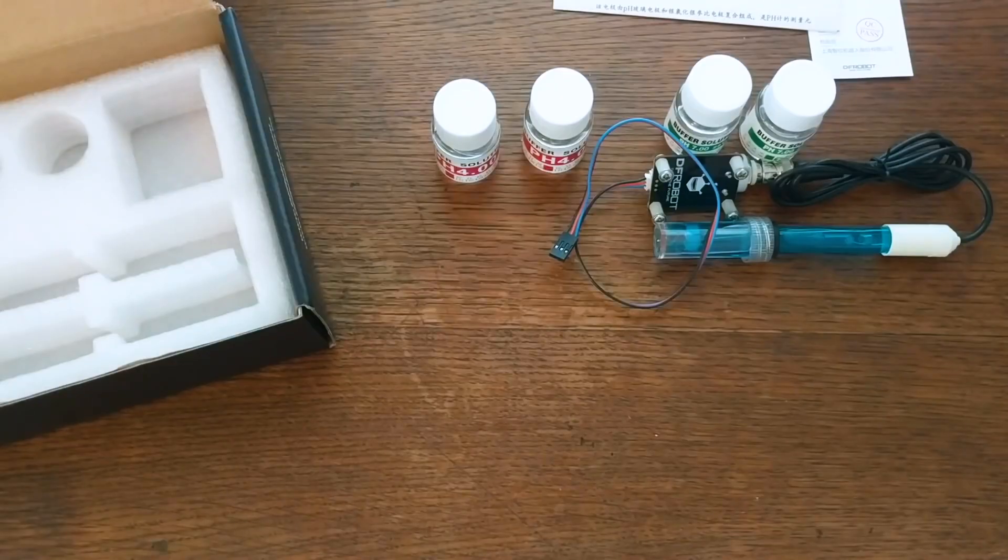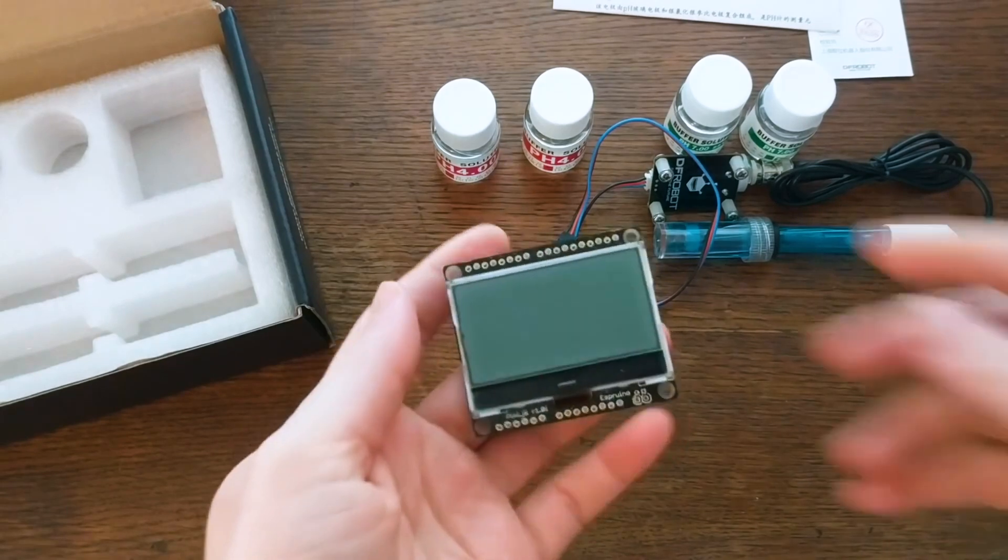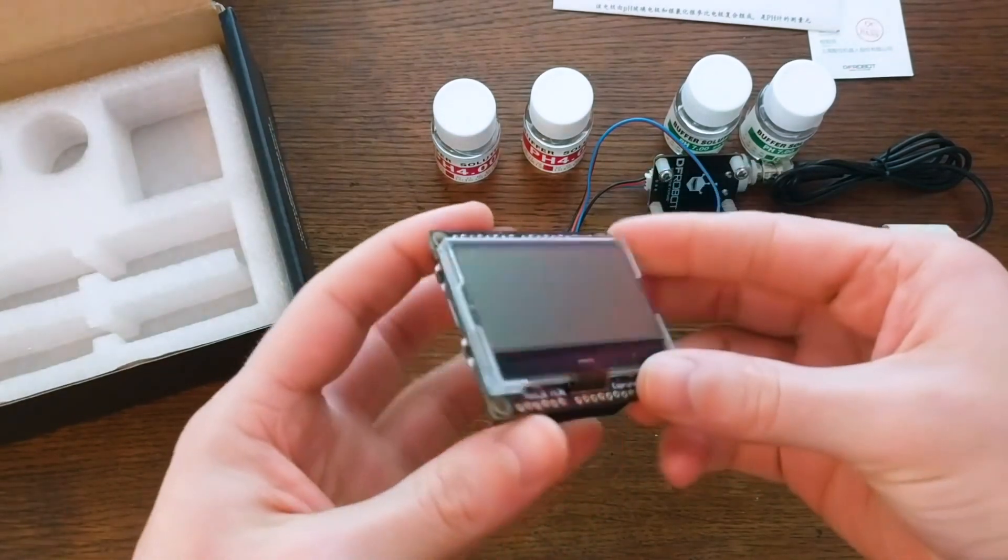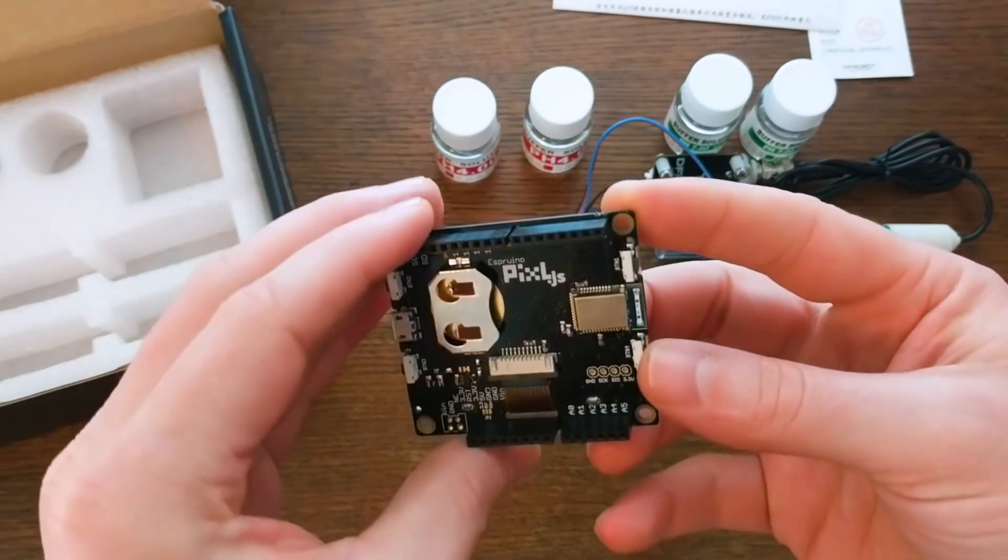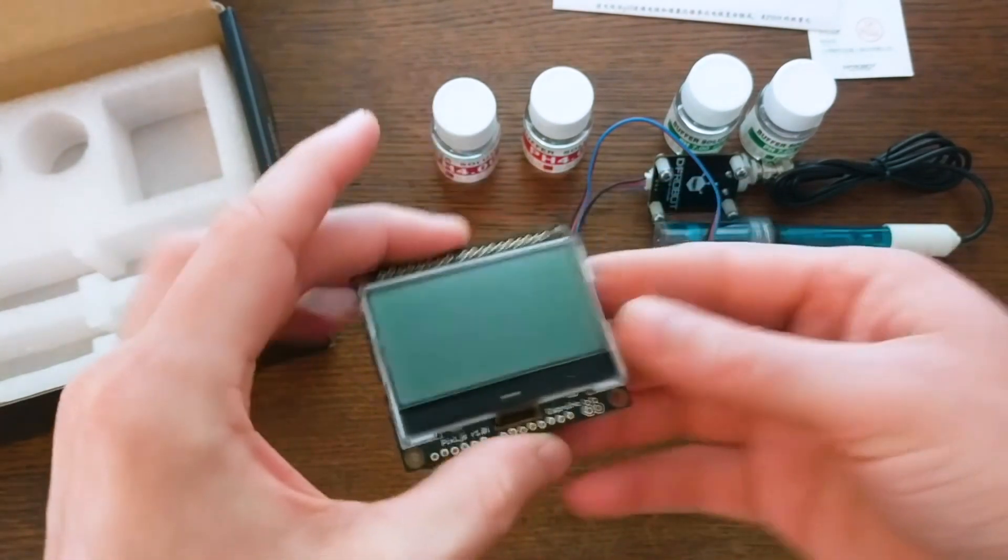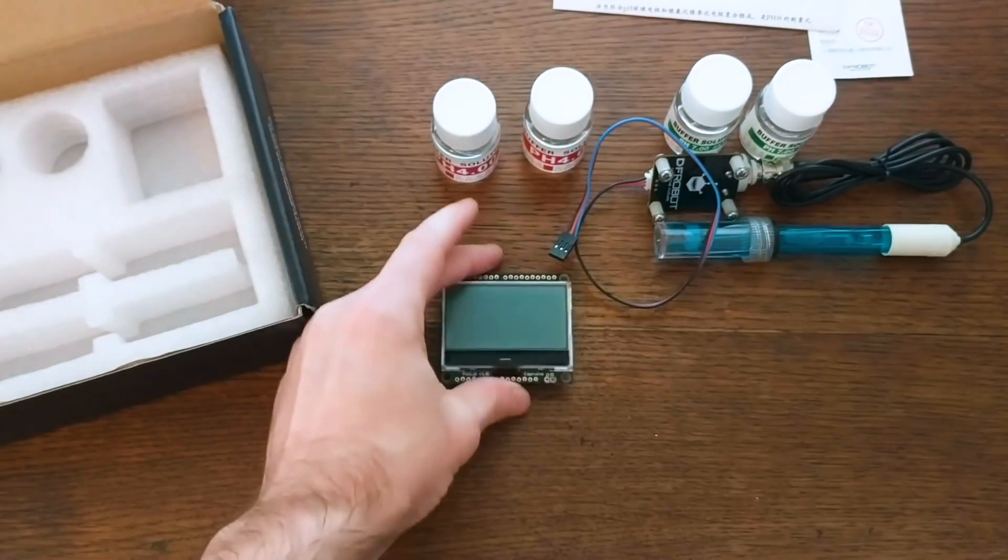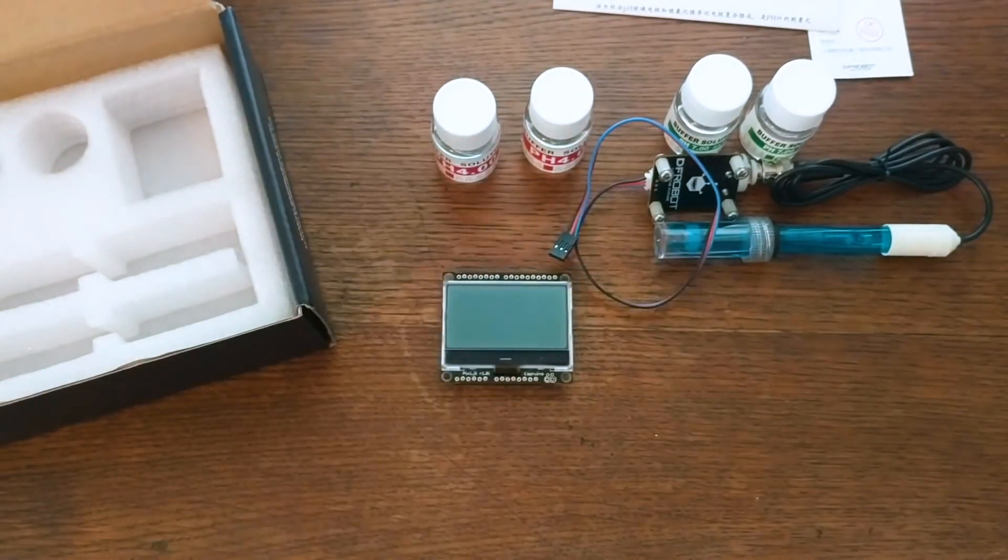But I won't be using Arduino or Raspberry Pi, and instead I'll be using this PixelJS. Now that means I'll need to write my own library for converting the analog readings to pH values. But that's not that bad, and we'll start by just printing out the analog readings onto the screen.